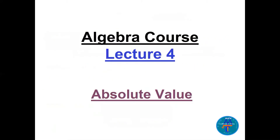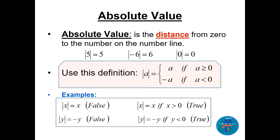Lecture 4 is about absolute value. We start by defining the absolute value as the distance from zero to the number on the number line. So if you have the number 5, the absolute value of 5 is the distance from 5 to zero. The absolute value of -6 is 6, since the distance from zero to -6 is 6. The absolute value of zero is zero.